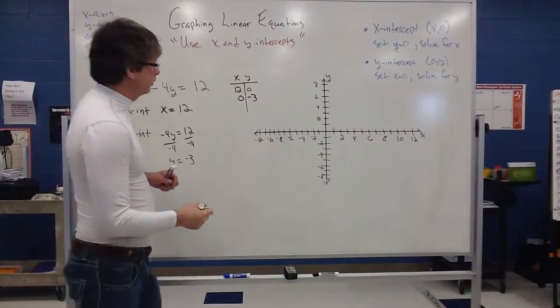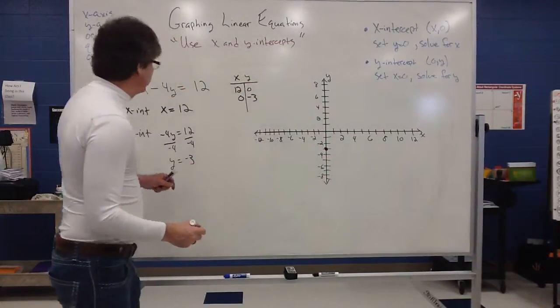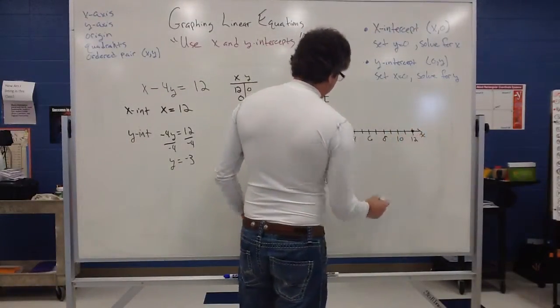So graph those two points, 0, negative 3. And then we have 12, 0. So that actually would make a little longer graph here. So 12, 0 would be out there.